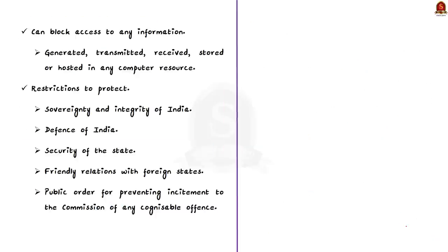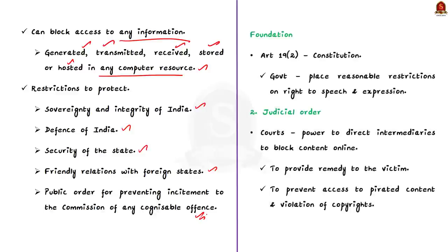The government can ask them to block the data available for access by the public. According to section 69A, government can block access to any information generated, transmitted, received, stored or hosted in any computer resource if it is necessary in the interest of sovereignty and integrity of India, defense of India, security of the state, friendly relations with foreign states or public order, or for preventing incitement to the commission of any cognizable offense.